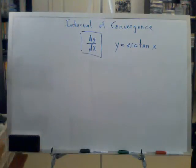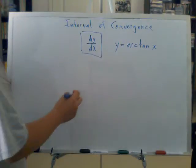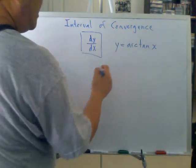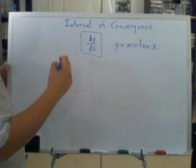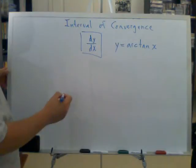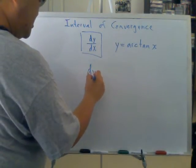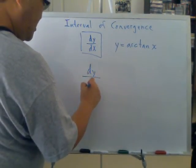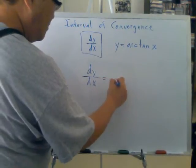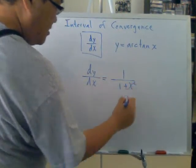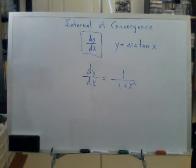So how do you find the interval of convergence for dy/dx? Well, first of all, you have to take the derivative of arctangent. And if you remember from my previous discussion, dy/dx equals 1 over 1 plus x squared.